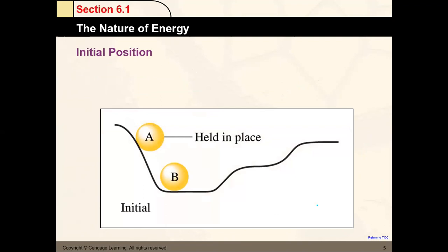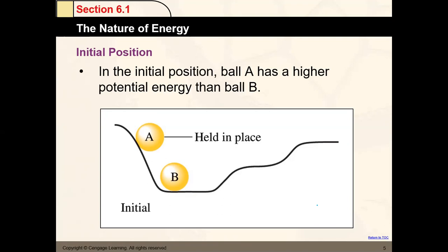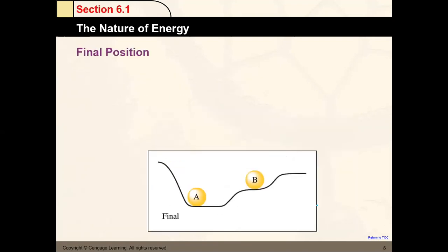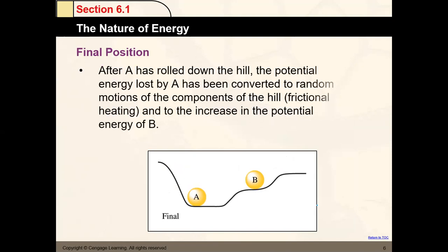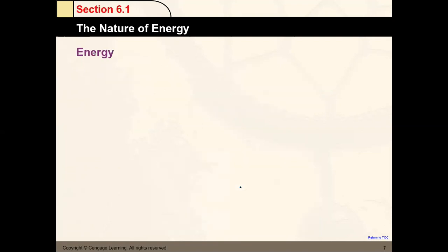Ball A has higher potential energy than ball B. If I let ball A go from its initial position, it rolls down and hits ball B, making it move to a final position. The potential energy lost by A is converted to random motion, frictional heating, and increasing the potential energy of B. A similar situation happens in chemical reactions — there is always energy transfer between reactants.